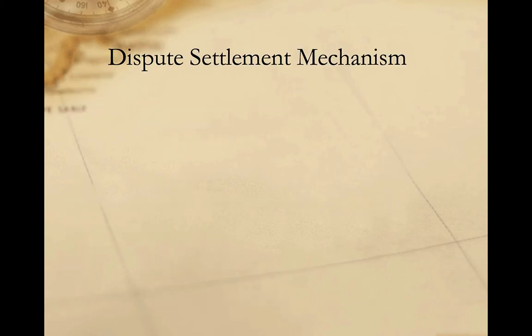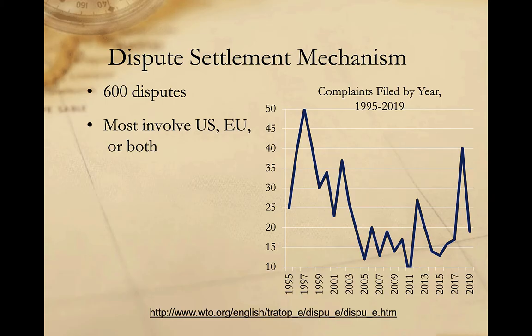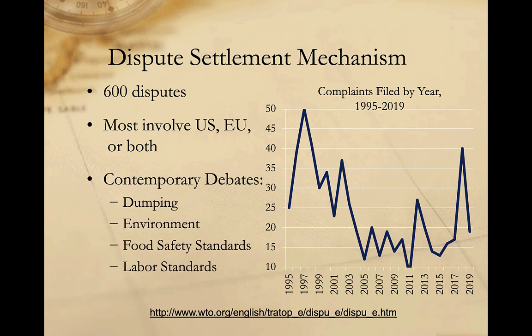The WTO's dispute settlement mechanism has been widely used. Between 1995 and 2019, nearly 600 disputes had been filed with the WTO, and more than half had been successfully resolved. The United States and the European Union have been the most active users, with the US involved in 279 cases and the EU in 191. Other actively involved countries include China with 65 cases, Canada with 63, and India with 56. The most common issues include accusations of dumping and disputes over environmental, food safety, and labor regulations.